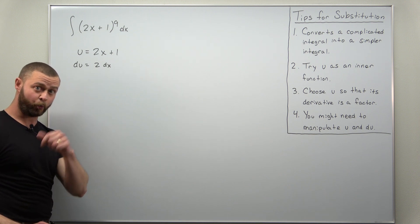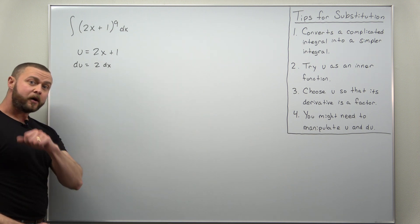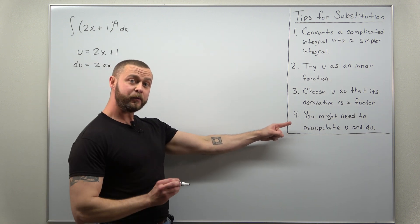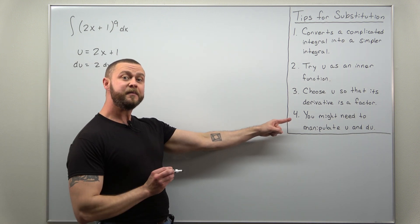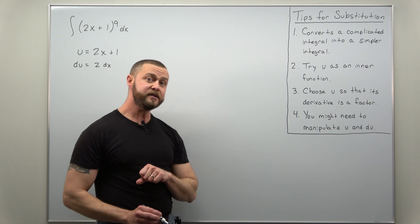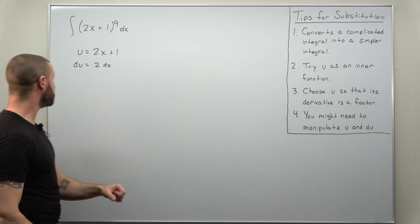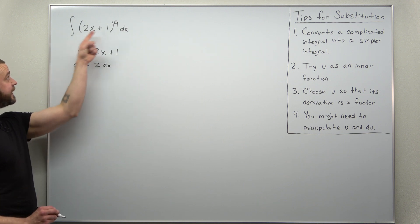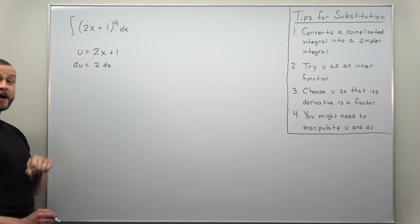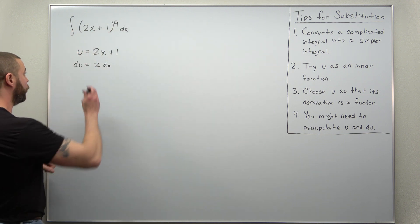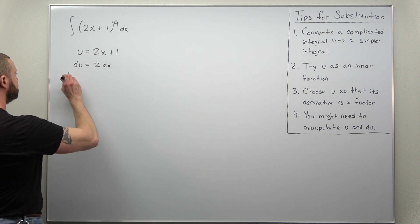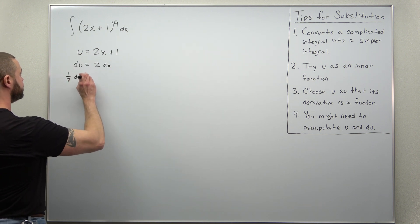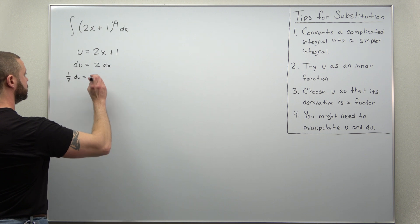The derivative of x is 1, and also keep in mind here, very common with substitutions, you might need to manipulate u and du, and what's extremely common is being off by a factor like here we're off by a factor of 2. So I can divide that over to the other side as a 1 half to get 1 half du equals dx.